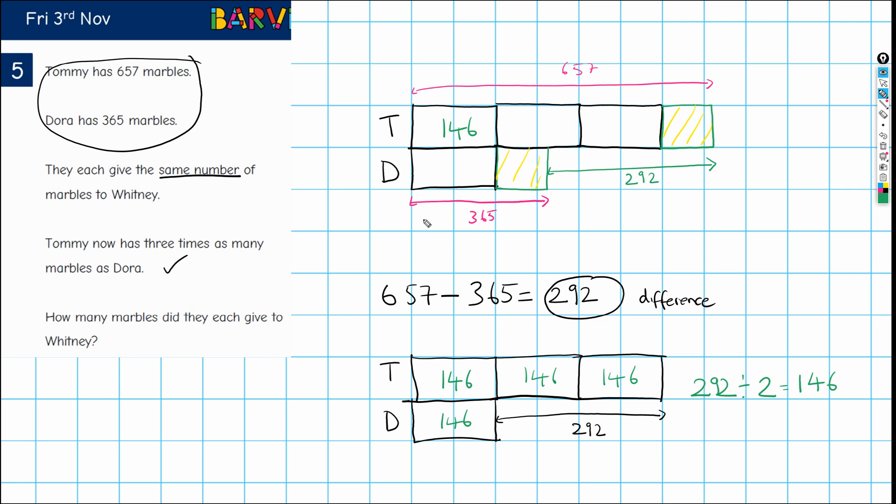So 146, 146. What we need to do is, let's look at what Dora has. So Dora had 365. We know that this is 146, so here is our question mark. And clearly we need to take 146 away from 365. So 365 minus 146, that gives us 219.